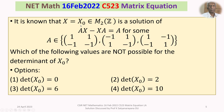We have X = X₀ ∈ M₂(ℤ), given to be a solution of the matrix equation AX - XA = A for some A in that set, and we have to discuss which of the following values are not possible for det(X₀) from among the four options. Since the question is from Part C, we may get more than one answer.